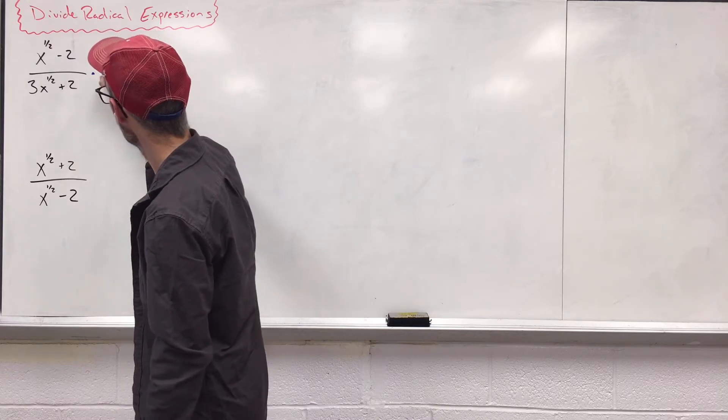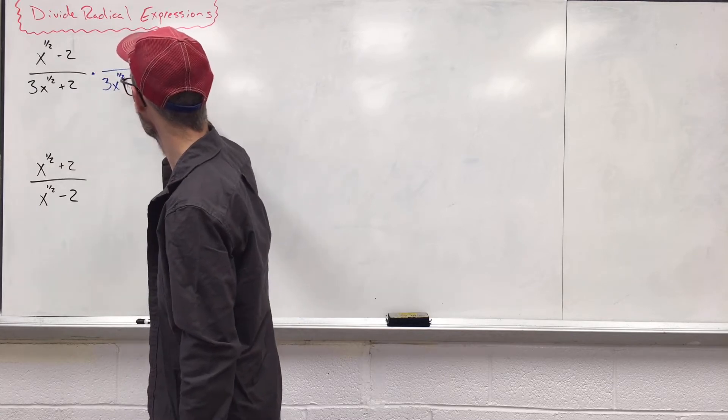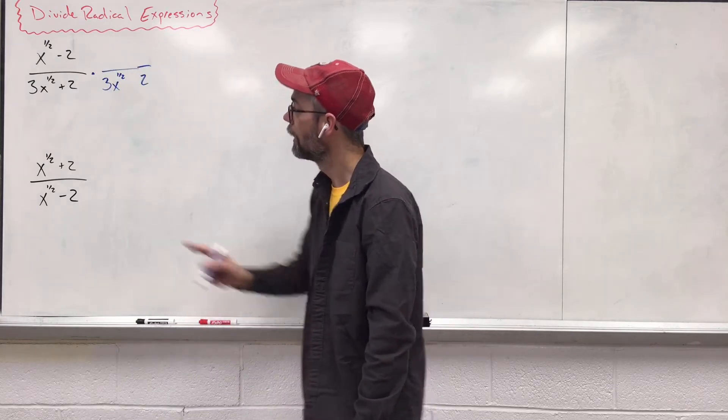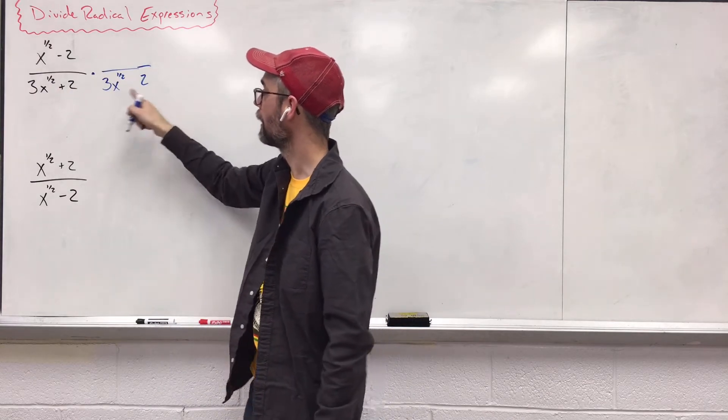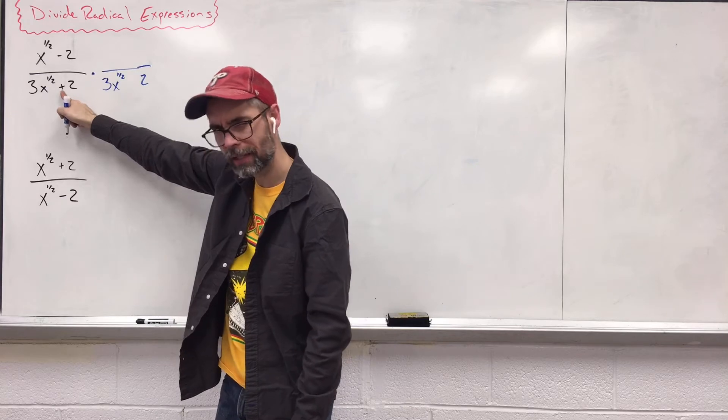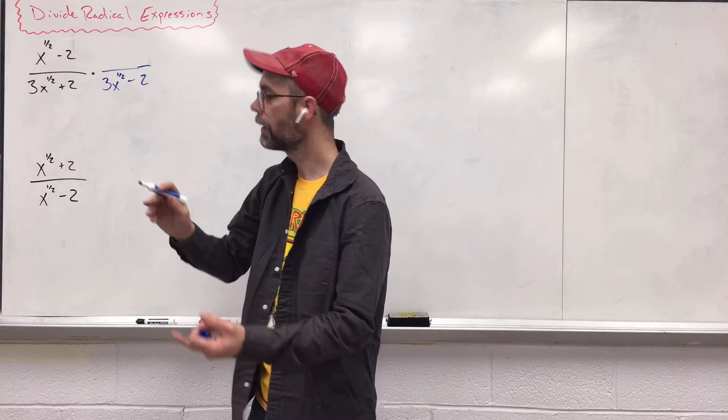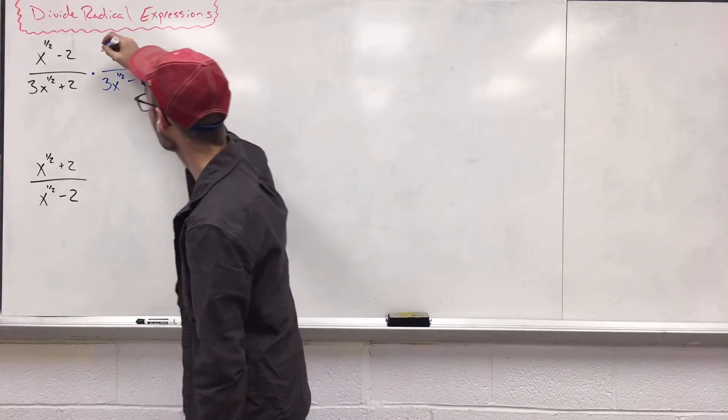Okay, so we're going to multiply by a value of one, so 3x to the one-half and a two. Our conjugate here, I'm going to rewrite my whole denominator again. The only difference is that this plus sign is going to change to a minus sign. It's the only difference. And since we're rationalizing, we want the bottom and the top to be the same exact thing.